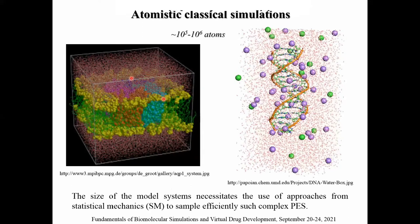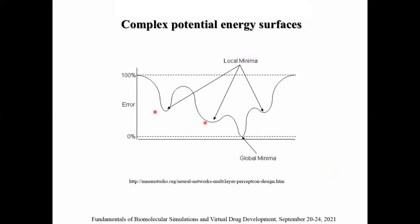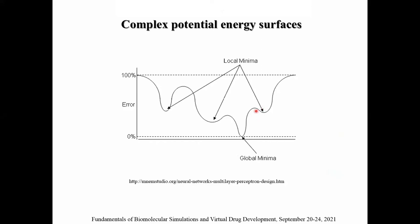This is a part of a lipid bilayer with some proteins embedded into it, this is a DNA fragment with water solvent and some counter ions such as sodium chloride — that is normally how the resulting models look like. The sizes nowadays are 10^5 to 10^6 atoms, so these are quite large models and their potential energy surface will be rather complex, with many minima and maxima of different barrier heights. We need some statistical approach to properly sample the potential energy surface.